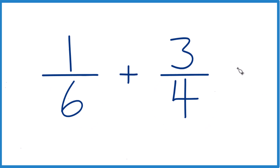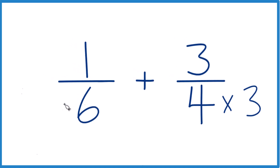So let's do this. 4 times 3 would be 12. And 6 times 2 would be 12. So we'd have 12 in our denominators here.